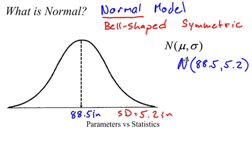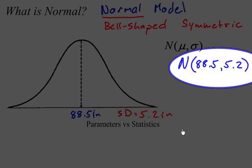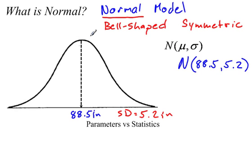So whenever you see this type of notation right here, what you should be able to tell me or tell yourself is that I'm dealing with a normal model that has a mean of 88.5 and a standard deviation of 5.2. And since it is a normal model, we should also know that it is bell-shaped and symmetric.